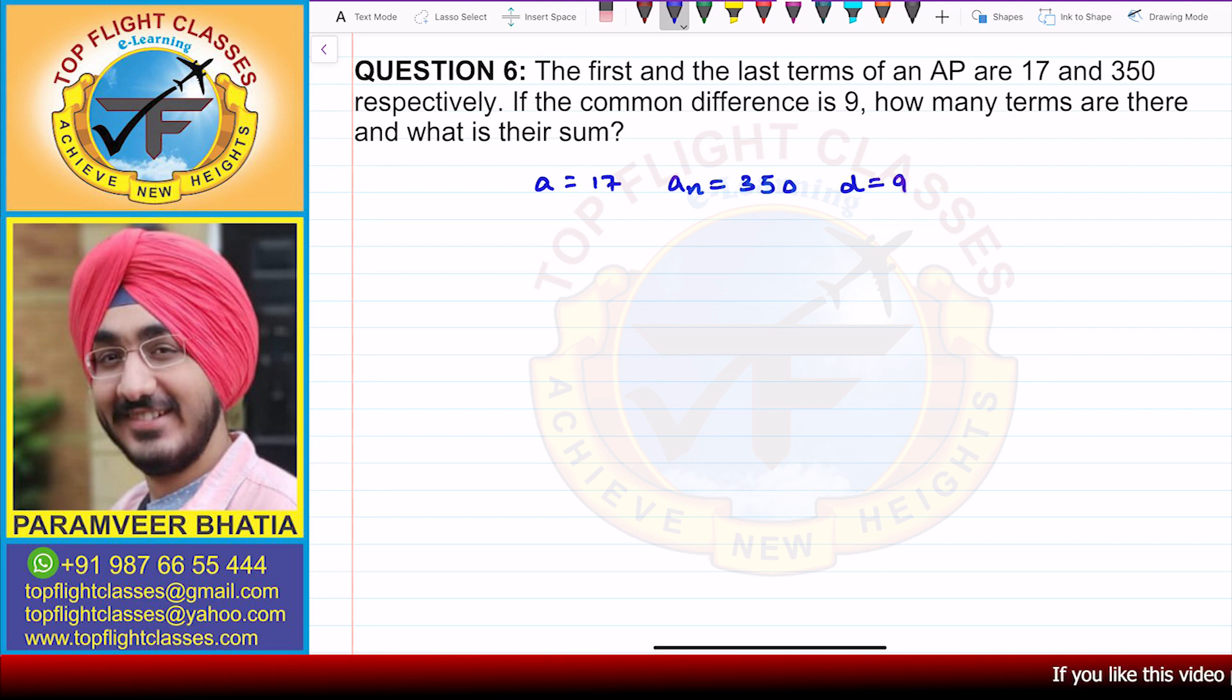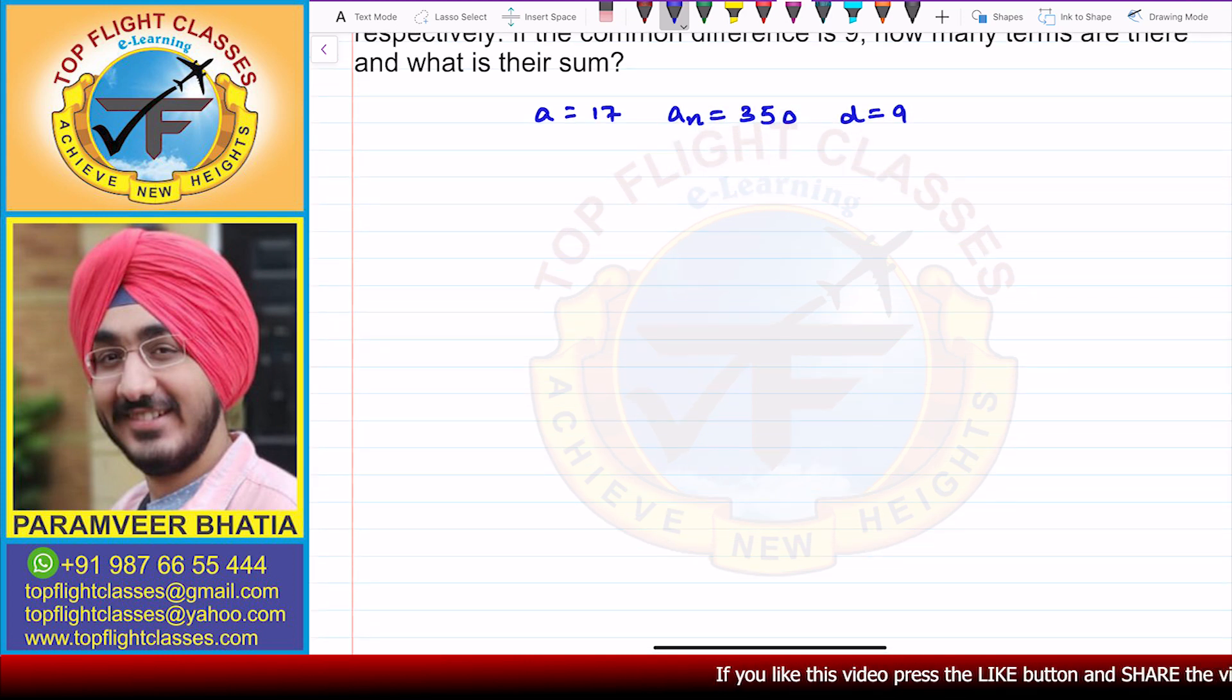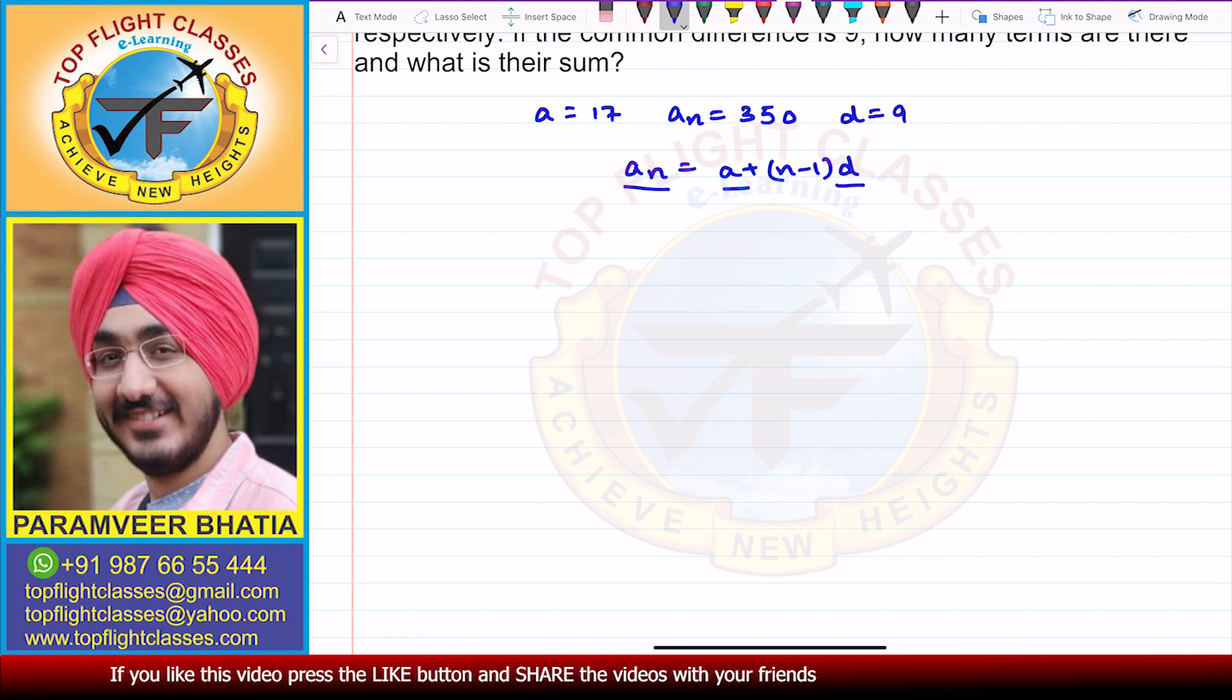So we need to find the number of terms. First of all, number of terms is given by AN equals A plus N minus 1 times D. So AN is given, A is given, and D is also given.